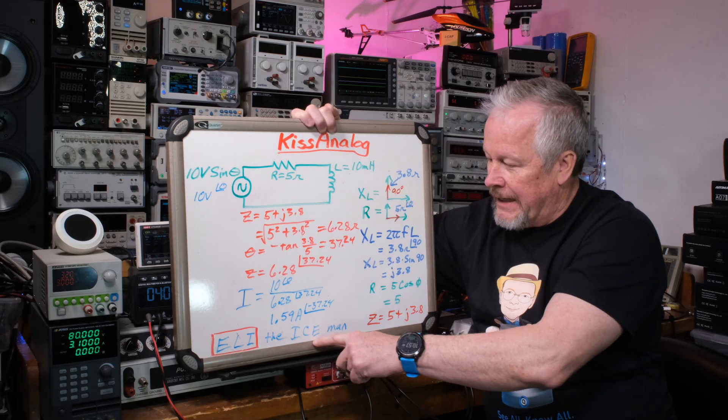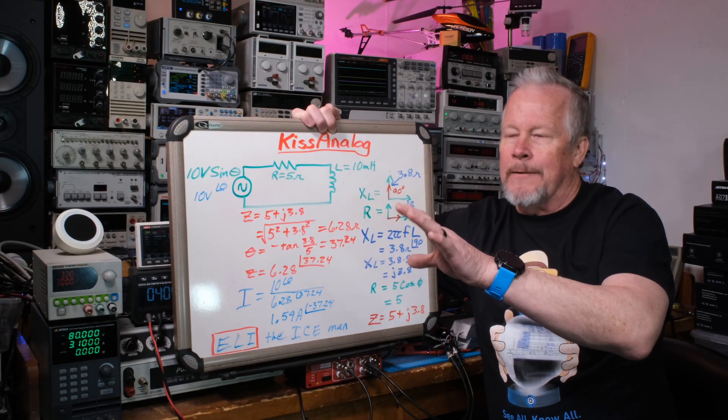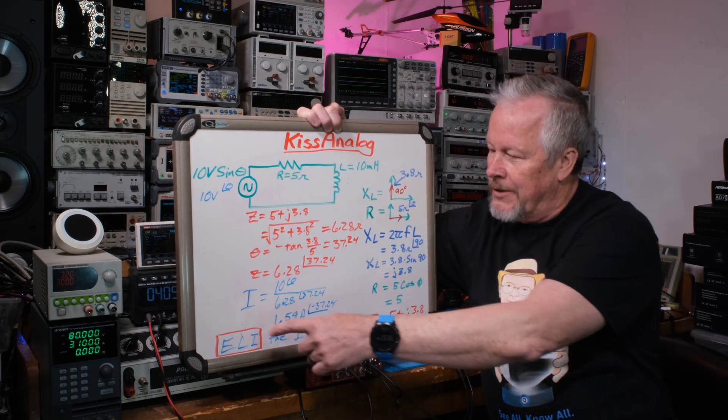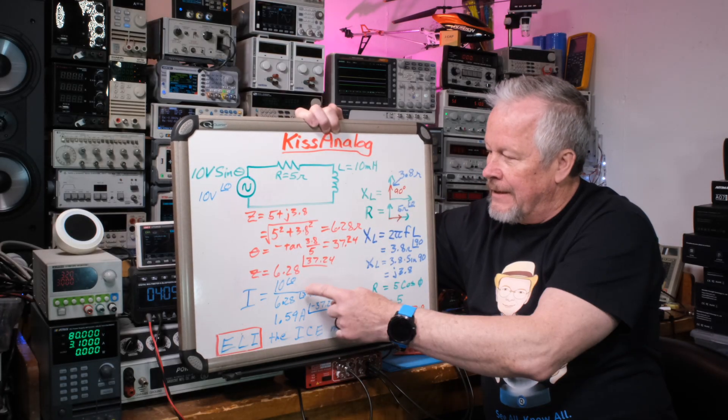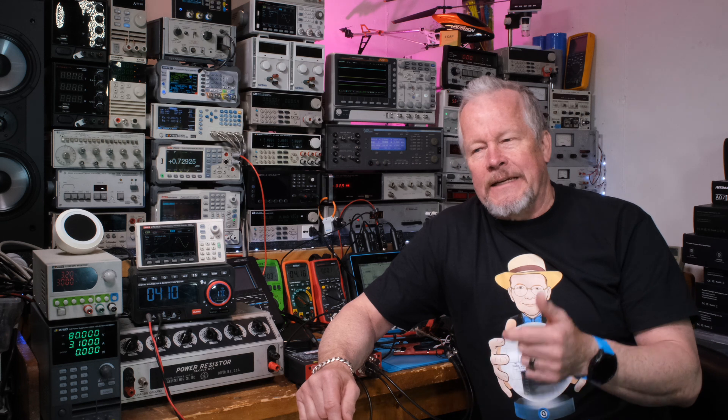For capacitors, current is ahead of voltage — you have to charge the capacitor before you get voltage. For inductors, voltage hits first and then presses current through — that's why inductors are called chokes, they choke off the current. So ELI: voltage at zero, current comes after at minus 37.24 degrees. That matches what we saw in the simulation. You can also replace the inductor with a capacitor or add one and run the simulation to see how it compares to the math.